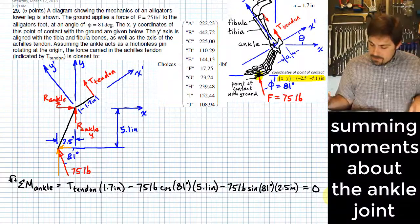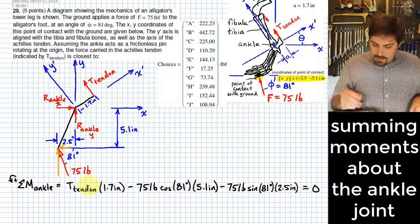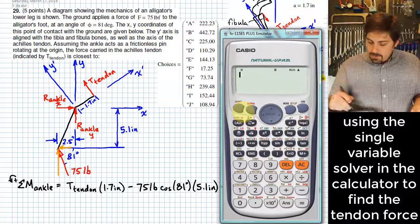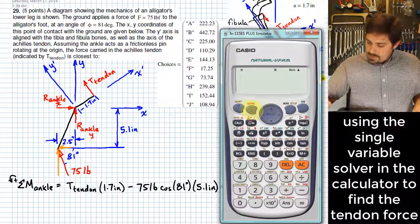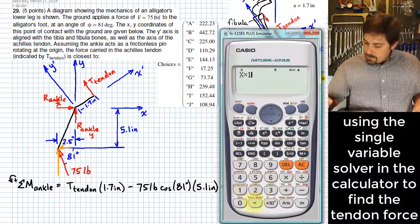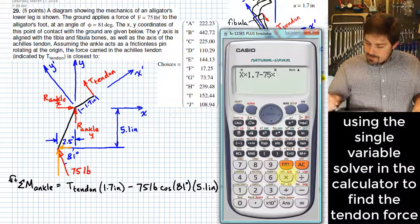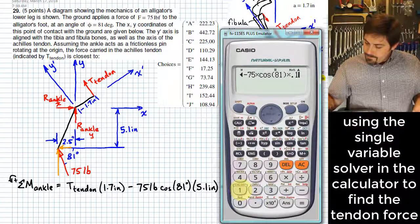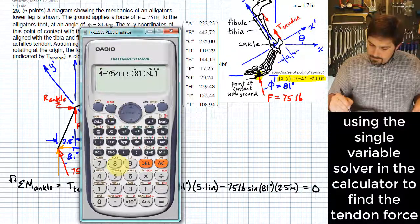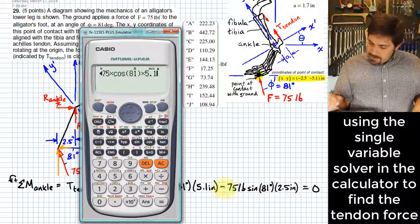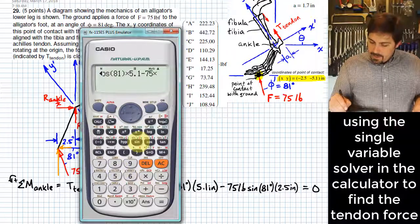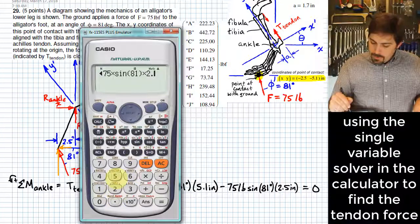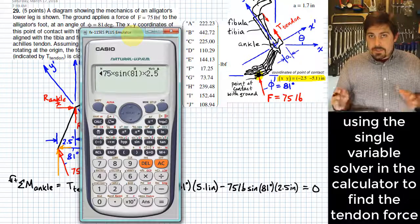So the only thing left to do is to solve for the force in the tendon. And we can do that just by plugging it into the calculator. Some of you have seen this before, it will solve these types of single variable equations quite readily. So we've just put in x, that's the variable we will use for that force, times 1.7, minus 75 times the cosine of 81 degrees, times 5.1. Then we need to subtract 75 times the sine of 81 degrees times 2.5.